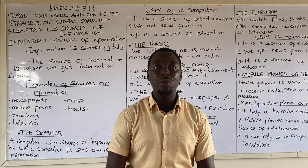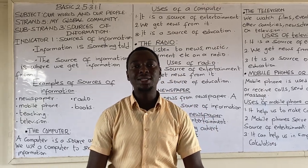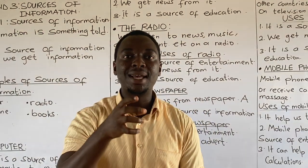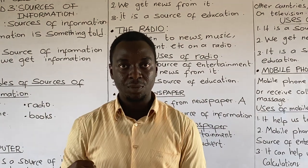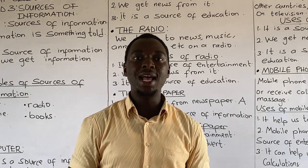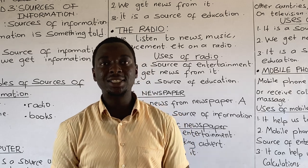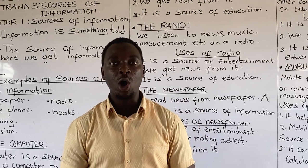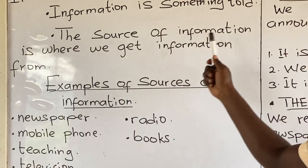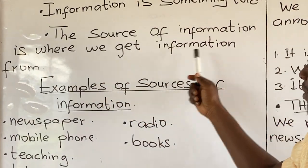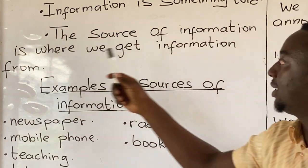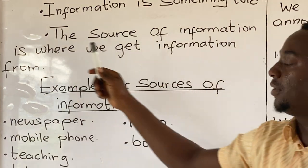The second keyword we have to look at is Sources. When we say Sources, a source is where something is gotten from. Now let's put it together — Sources of Information. The source of information is where we get information from.